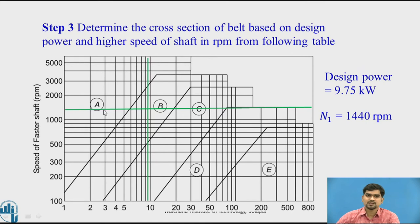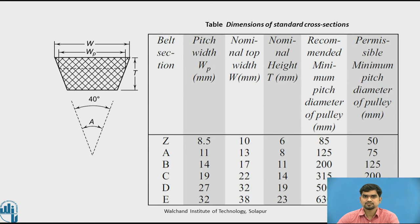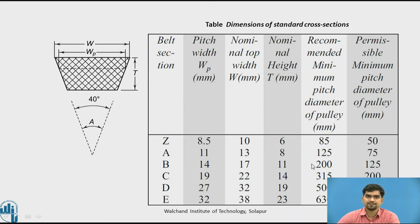The lines intersect at a junction, giving us the cross-section of the belt as the B belt. For the B belt, the recommended minimum pitch diameter of the pulley can be found. The belt section for our application is B belt. For B belt, the pitch width Wp is 14 mm, the nominal top width W is 17 mm, the nominal height t is 11 mm, and the recommended minimum pitch diameter is 200 mm. So the value of small d is 200 mm.